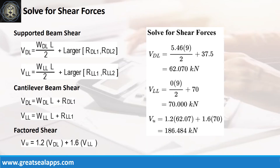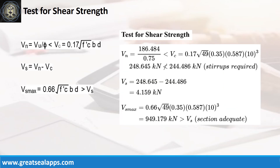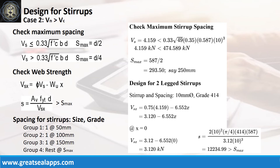The shear force from dead load is 62.07 kN and from live load is 70 kN, for a factored shear force of 186.484 kN. The nominal shear force is 248.645 kN, which is greater than the concrete capacity of 244.486 kN. Additional shear capacity from stirrups is 4.159 kN, less than the maximum stirrup capacity of 949.179 kN. The maximum stirrup spacing is 250 mm, with web strength at the face of support of 3.12 kN and initial spacing at 12,234.99 mm.